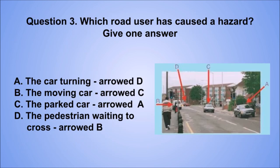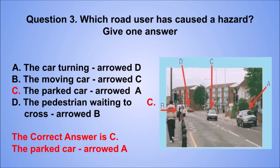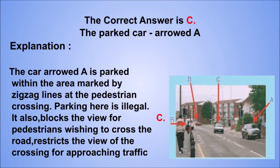Question 3. Which road user has caused a hazard? Give one answer. A. The car turning. B. The moving car. C. The parked car. D. The pedestrian waiting to cross. The correct answer is C, the parked car. The car is parked within the area marked by zigzag lines at the pedestrian crossing. Parking here is illegal. It also blocks the view for pedestrians wishing to cross the road and restricts the view of the crossing for approaching traffic.